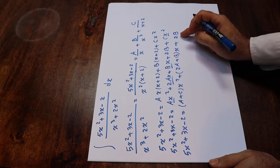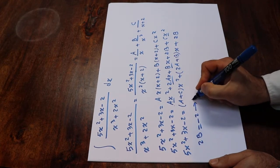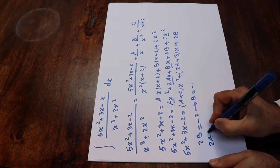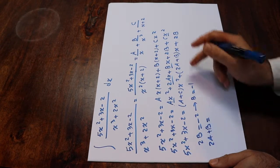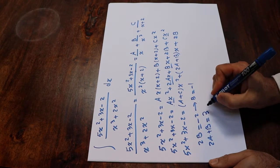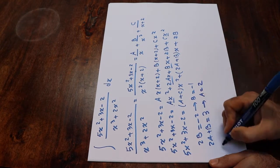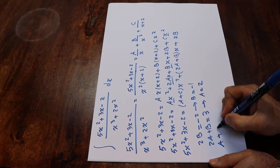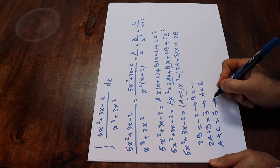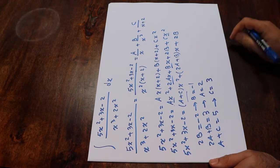From the constant term: 2b = -2, so b = -1. From the coefficient of x: 2a + b = 3, and since b = -1, a = 2. From the coefficient of x²: a + c = 5, and since a = 2, c = 3.